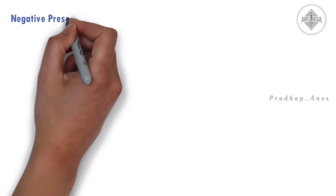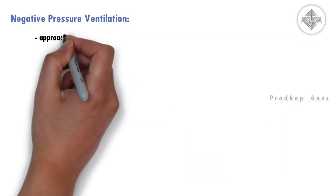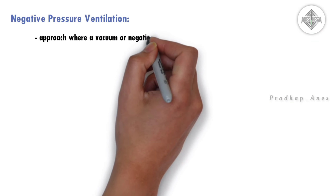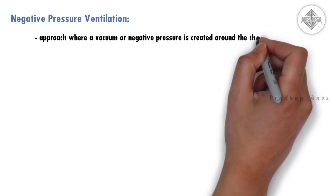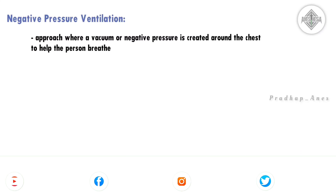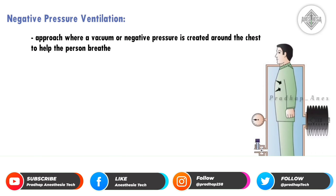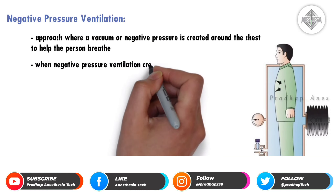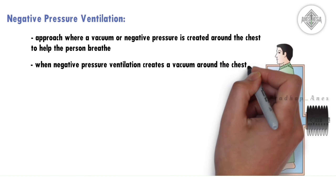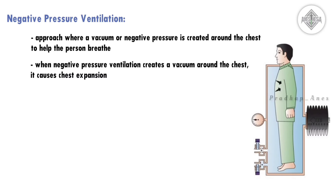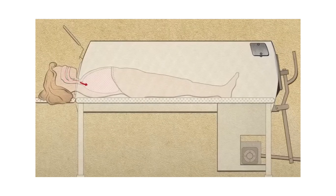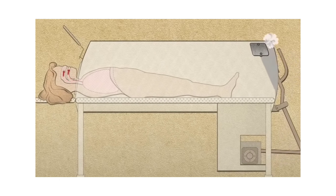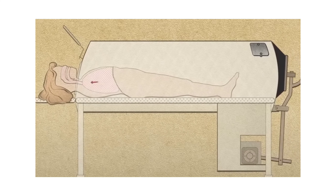Negative pressure ventilation is an approach where a vacuum or negative pressure is created around the chest to help the person breathe. When negative pressure ventilation creates a vacuum around the chest, it causes chest expansion. This expansion lowers the air pressure inside the lungs, which draws air in through the nose and mouth, allowing oxygen to enter the lungs naturally. This mimics the natural process of breathing.